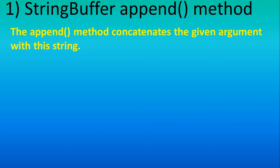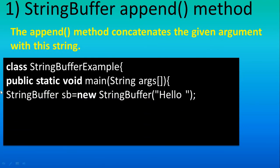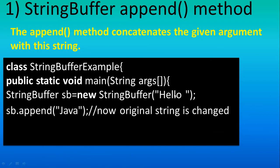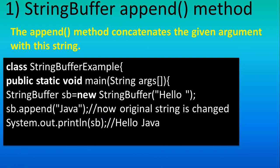In StringBuffer we have the append() method, which is used for adding to an existing string. The append() method concatenates the given argument with the string. For example, you create a StringBuffer object with an initial string value, then use append() with another string value, and whatever is appended is added at the end. So the output is the initial string plus the second string — for example, 'Hello Java'. This way you can change the string value, which you cannot do with a simple String class.